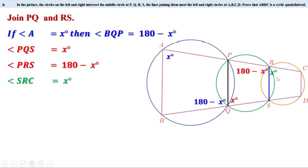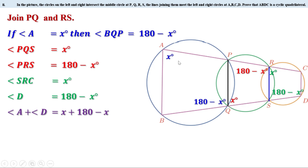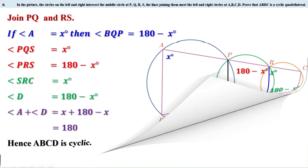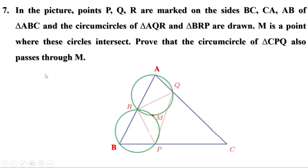RSDC is a cyclic quadrilateral with opposite angles supplementary: since angle SRC equals x°, angle D equals 180° − x°. In quadrilateral ABDC, angles A and D are one pair of opposite angles. Angle A is x° and angle D is 180° − x°, so angle A plus angle D equals 180°. One pair of opposite angles is supplementary, therefore quadrilateral ABDC is a cyclic quadrilateral.